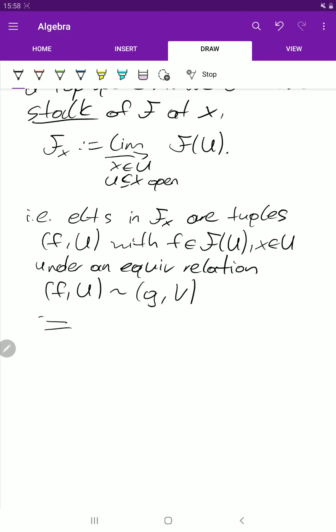They are equivalent if and only if there exists a subset W of the intersection of U and V. Again, W should be open, it should be a neighborhood of the point x, and such that f restricted to W is equal to g restricted to W.